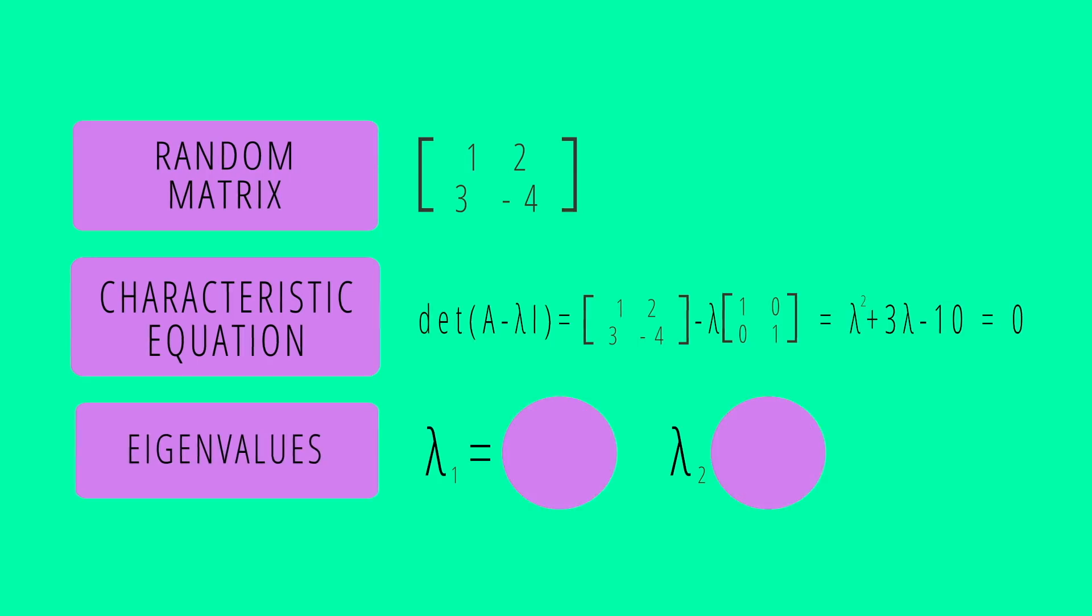Eigenvalues of random matrices are always spaced along a number line in a characteristic pattern, with consecutive eigenvalues never too close together or too far apart.